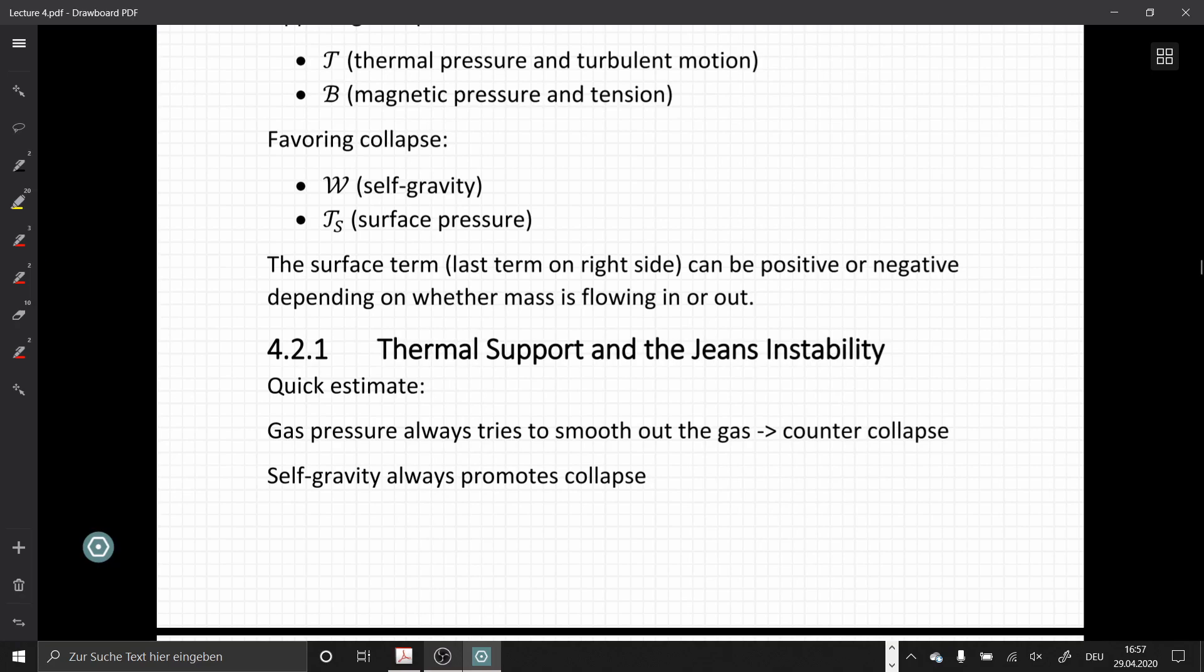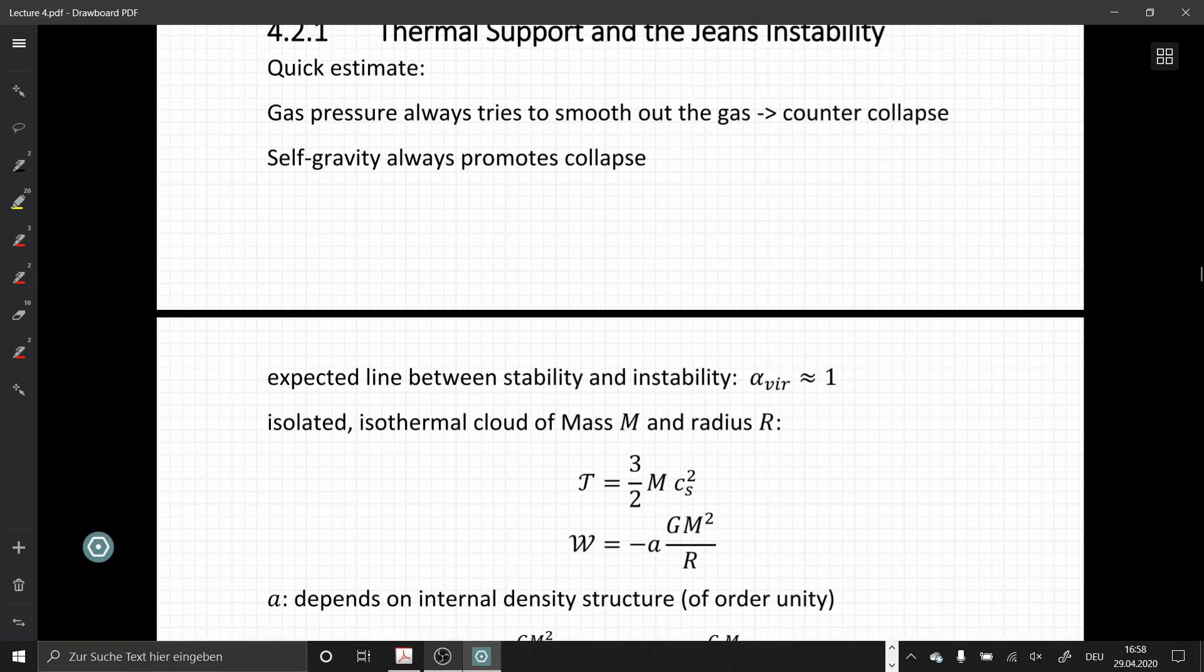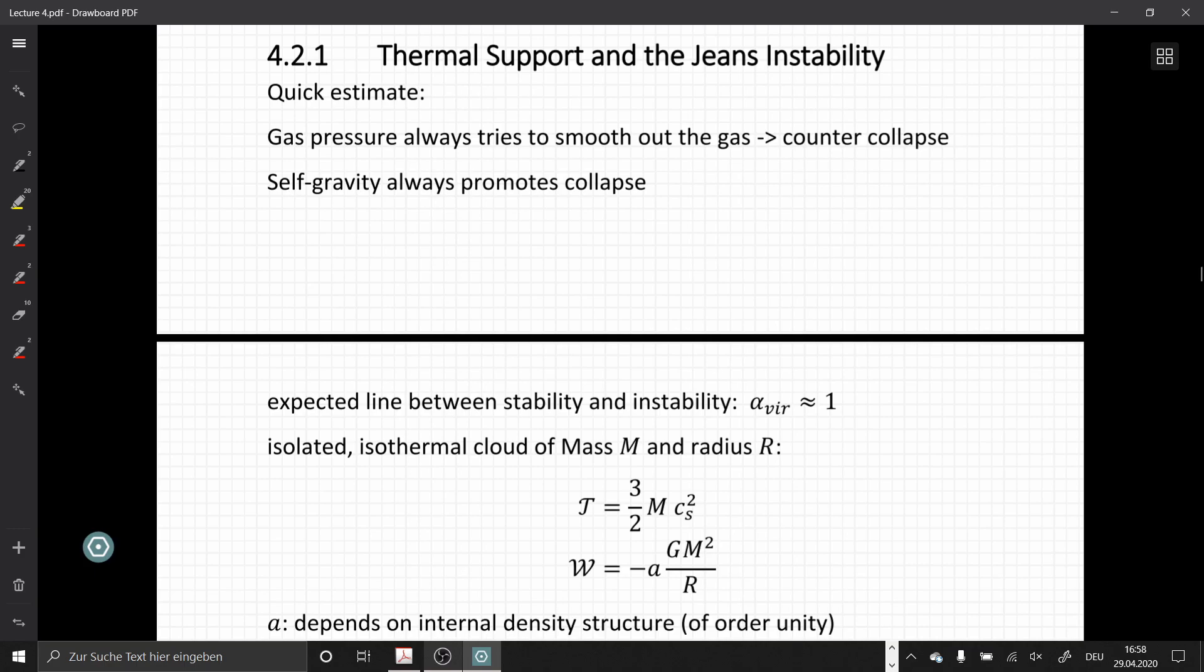Now we'll use the previous considerations to look at thermal support and the Jeans instability criterion. Let's quickly estimate the Jeans instability. Gas pressure always tries to smooth out the gas, working against collapse. This is in agreement with our intuition that pressure increases if something tries to collapse, working against further collapse.